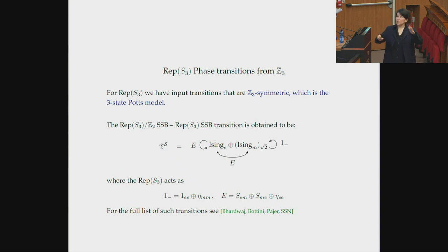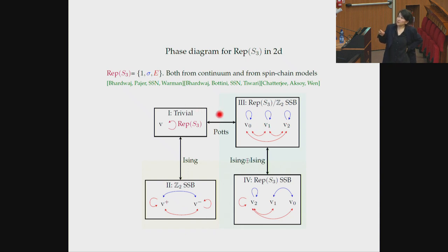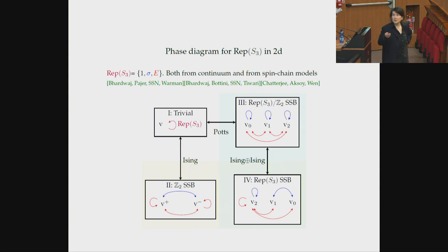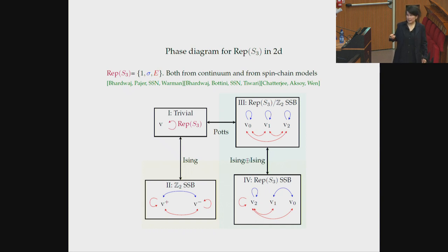One can also construct the associated gapless phase for Rep(S3). There's another example similar to Ising plus Ising but with relative Euler terms, giving an Ising plus Ising transition with the non-invertible symmetry acting. All of this can be assembled into a cartoon phase diagram: the four gapped phases for Rep(S3) with all vacua and symmetry action. Between them sit the Z3 Potts model, the Ising model, and Ising plus Ising. This can be understood both via continuum analysis using the SymTFT and via a lattice model with Rep(S3) symmetry, whose parameters can be tuned to realize this phase diagram.